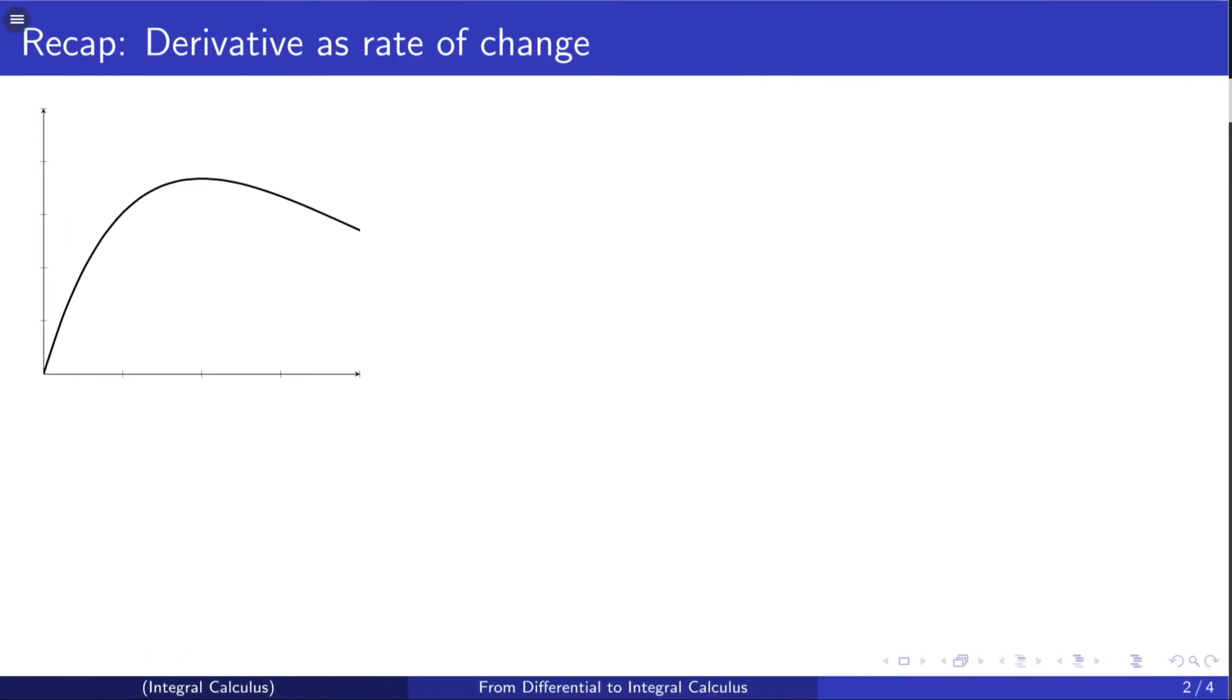And really the main subject of interest there was the derivative of a function. Recall that the derivative of a function is another function that represents its rate of change. So for instance, if this is the graph of the function y equals f of x, then the derivative of the function f at the point a is exactly equal to the slope of this tangent line.